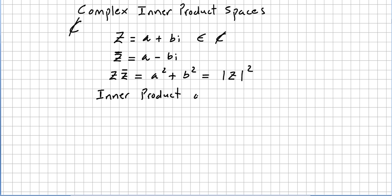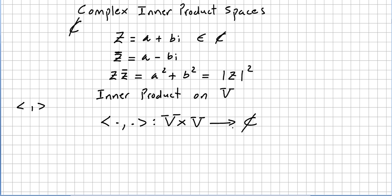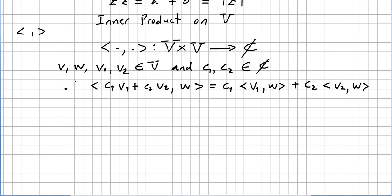So now, question: what is an inner product? An inner product on a vector space is a map — I'm going to write the map this way. Some people put dots here, sometimes we don't. This map takes V times V to the complex numbers. So we pick elements v, w, v1, v2 all in the vector space, and c1 and c2 in the complex numbers.